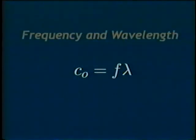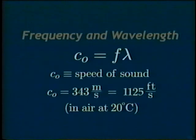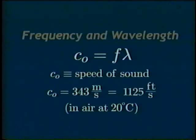An equation relating the two parameters is c-naught equals f lambda. C-naught is the speed of sound in the medium. In air, at a temperature of 20 degrees Celsius, the speed of sound is 343 meters per second. This equation implies that longer wavelengths are associated with lower frequencies, and shorter wavelengths are associated with higher frequencies.